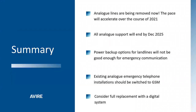I'll start off with a quick summary of the key takeaways. Firstly, analog telephone lines are being removed now, and the pace of that change will only accelerate over the rest of 2021 and into 2022. By the end of December 2025, all analog support will have been removed from the UK telephone network.